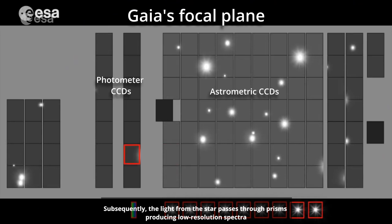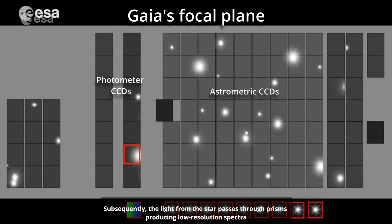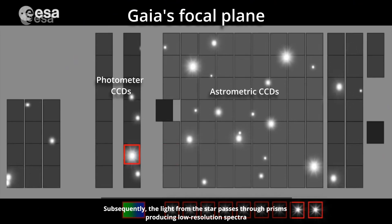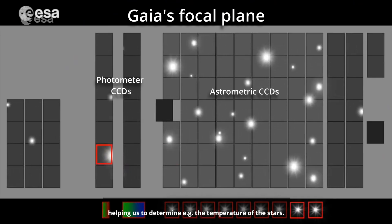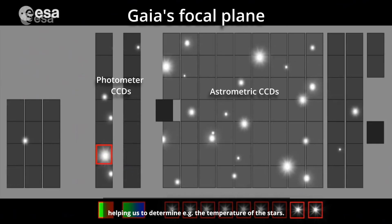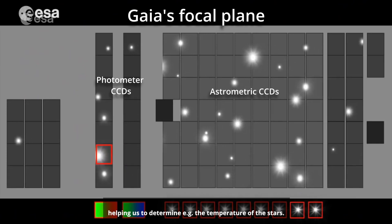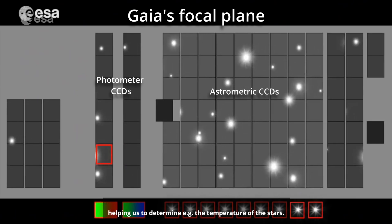Subsequently, the light from the star passes through prisms, producing low-resolution spectra, helping us to determine, for example, the temperature of the stars.